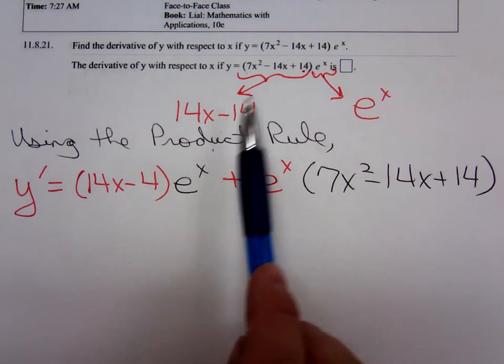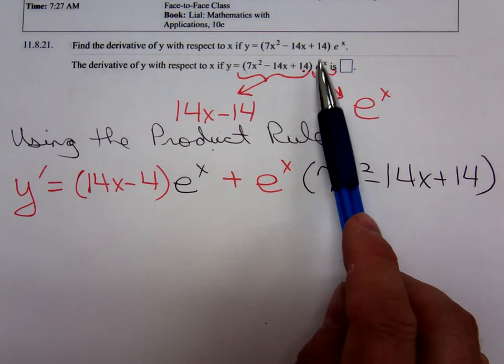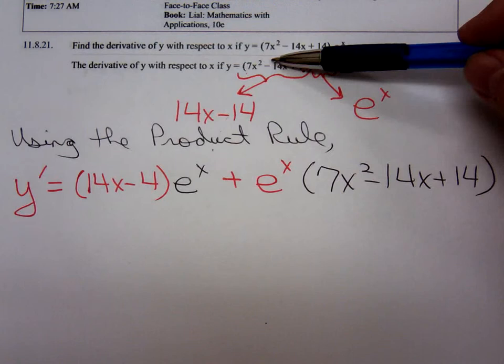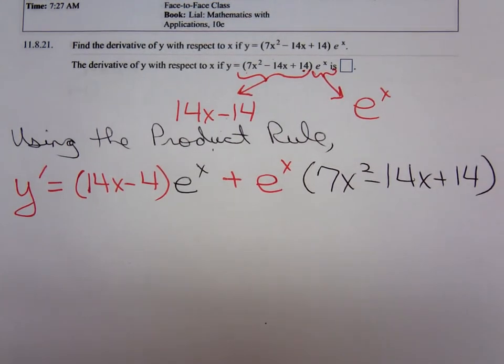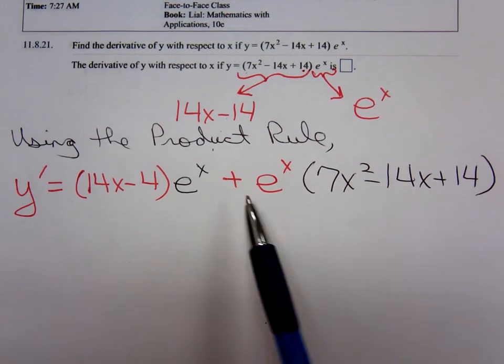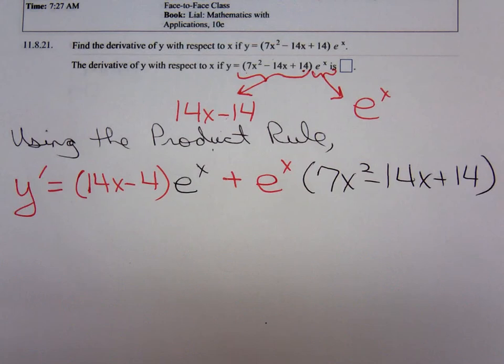It's the derivative of the first times the original second plus the derivative of the second times the original first. And when we look here, we have a common factor in these terms. What's the obvious common factor in those terms? The e to the x.